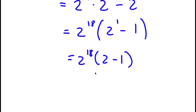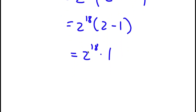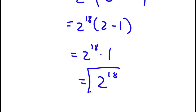And 2 minus 1 is equal to 1. So now I have 2 to the power of 18 times 1. Now, 2 to the power of 18 times 1 is simply just 2 to the power of 18, so I'm left with 2 to the power of 18.